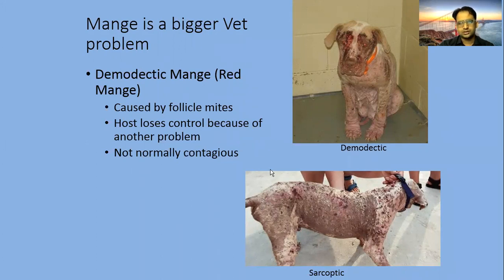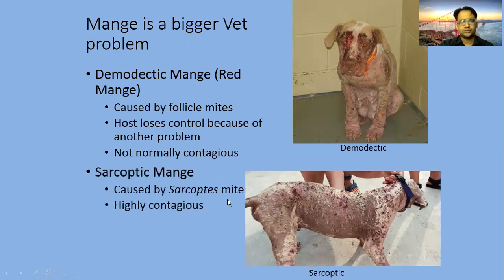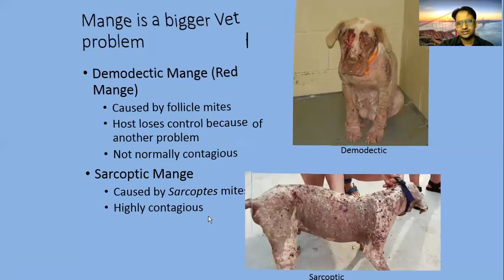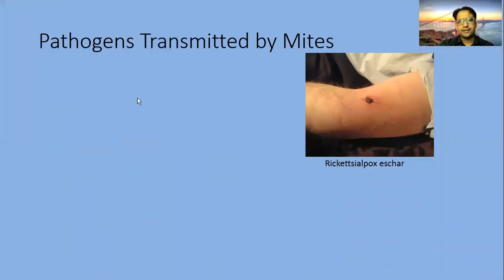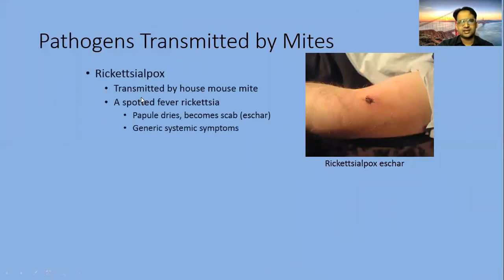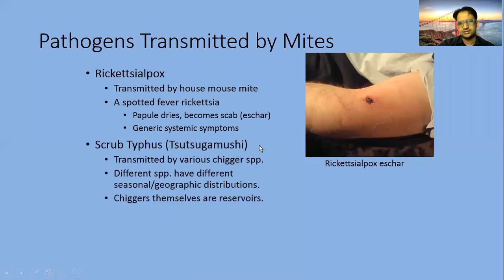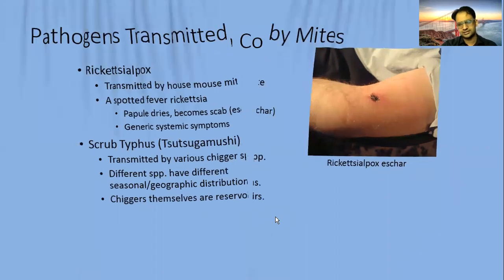Mange in animals is shown here in the picture. Sarcoptic mange is caused by sarcoptic mites and is highly contagious, whereas demodectic mange is a non-contagious form. Pathogens transmitted by mites include rickettsial pox, transmitted by house mouse mites — a spotted fever caused by Rickettsia, where a papule dries and becomes a scab with general systemic symptoms. Scrub typhus is also transmitted by trombiculid mite species.